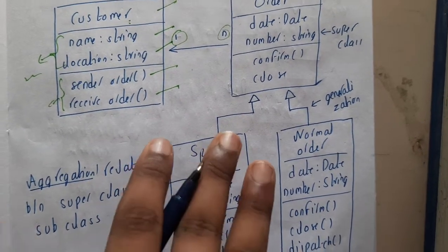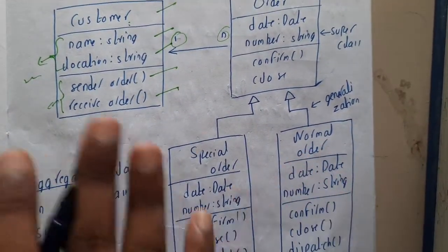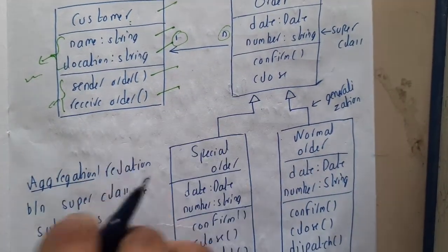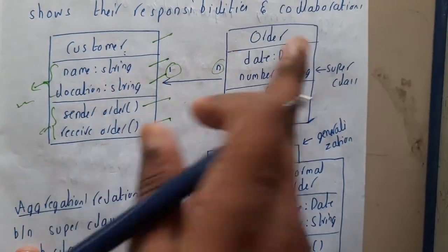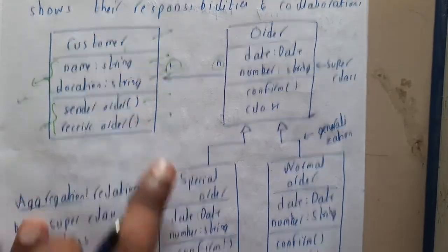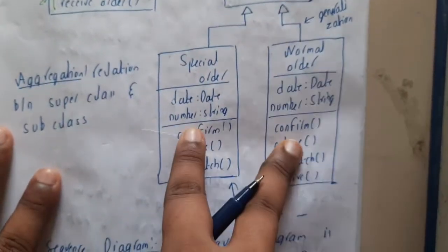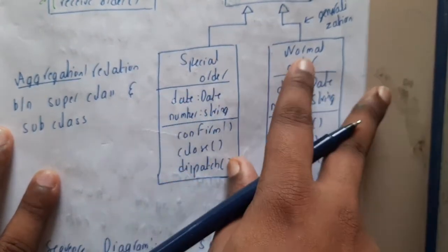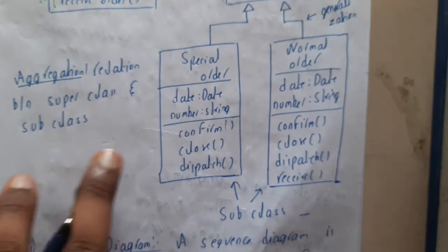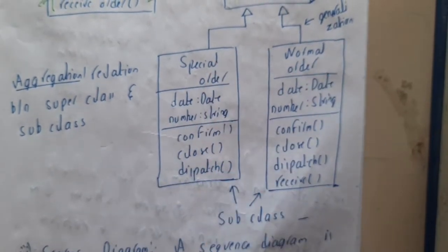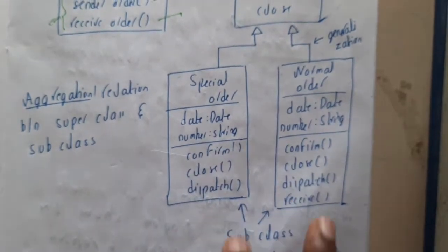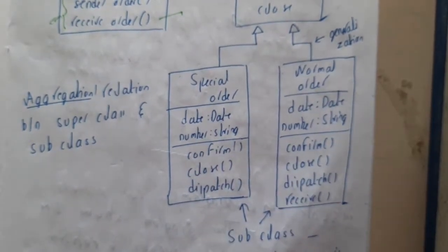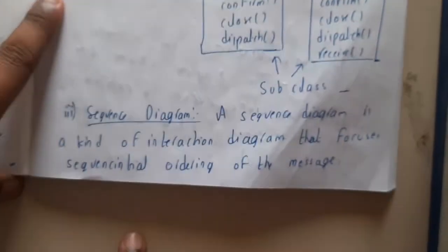We'll discuss one-to-n and n-to-one relations in our next unit when covering class diagrams in detail. For example, an Order is related to Customers. Inside Orders, there are two different types — Special Order and Normal Order. These two are subclasses of the main Order class.